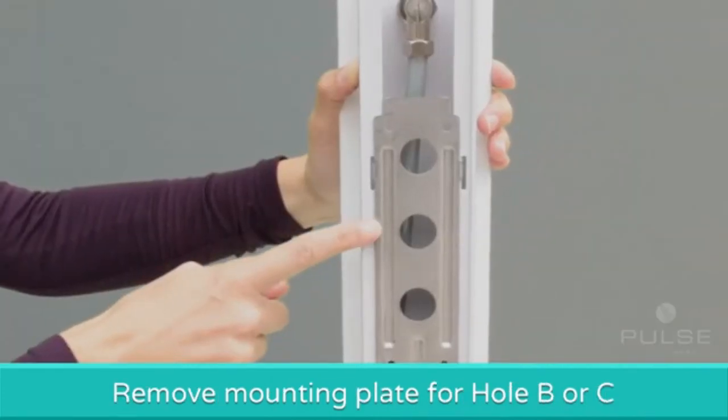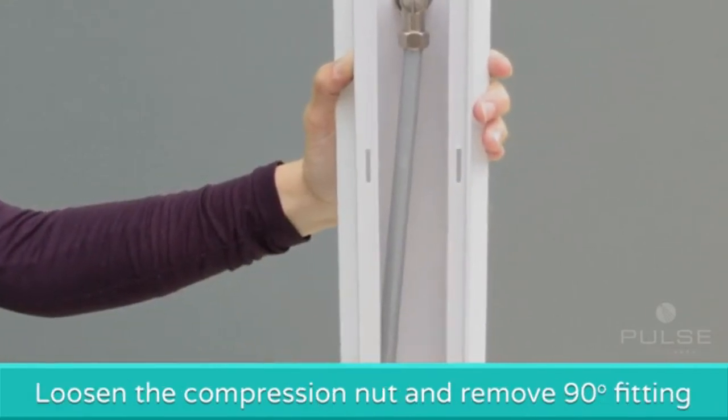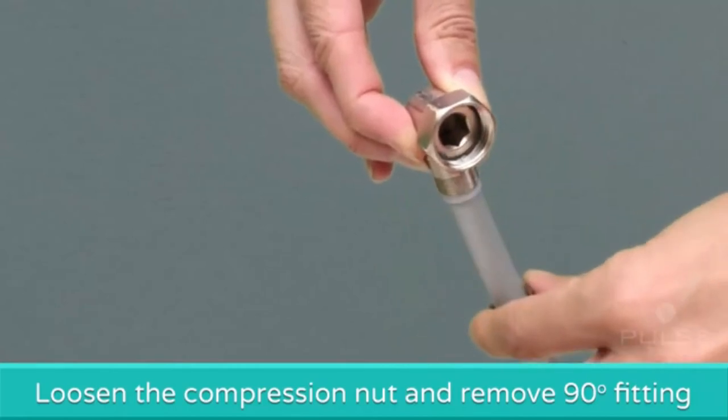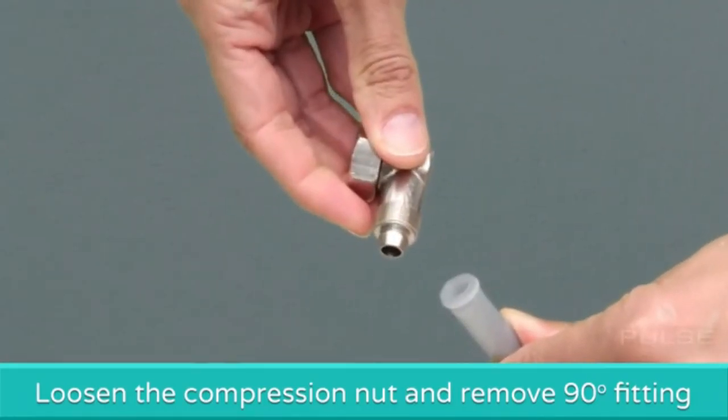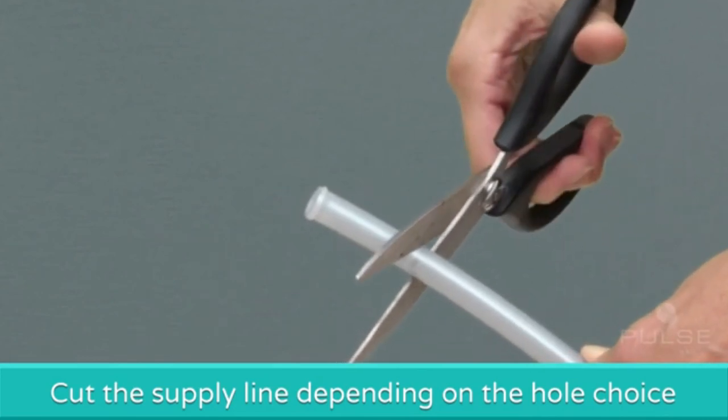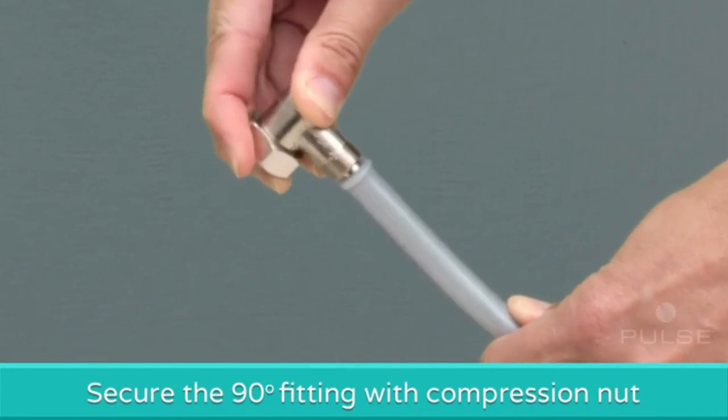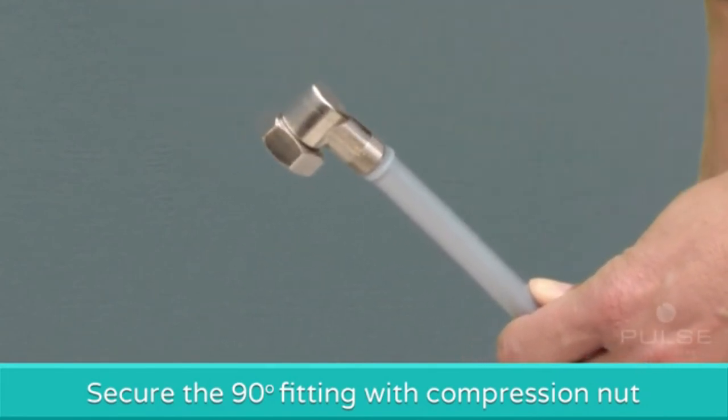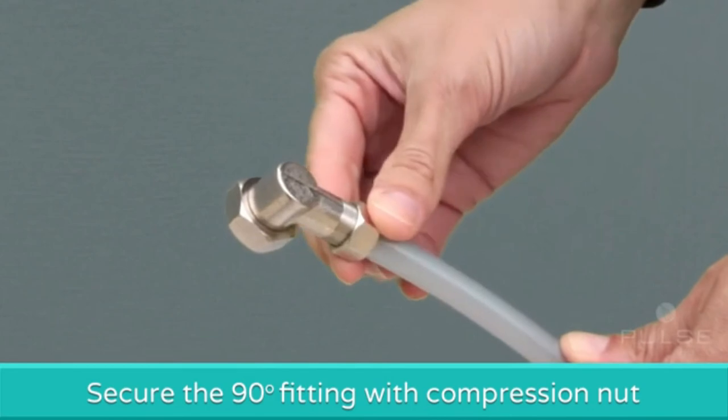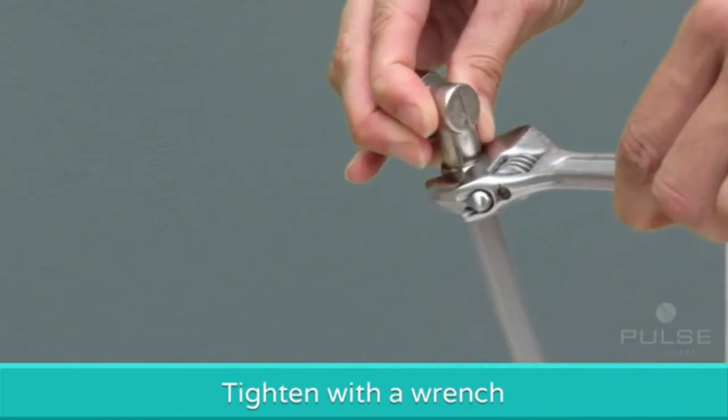If using hole B or C of the mounting plate, remove the mounting plate from the Aloha. Loosen the compression nut and remove the 90 degree fitting. Cleanly cut the supply line at predetermined mark depending on the hole choice. Then, push the supply line over the barbed portion of the 90 degree fitting. Securely tighten the 90 degree fitting with the compression nut. Use a wrench to tighten the 90 degree fitting.